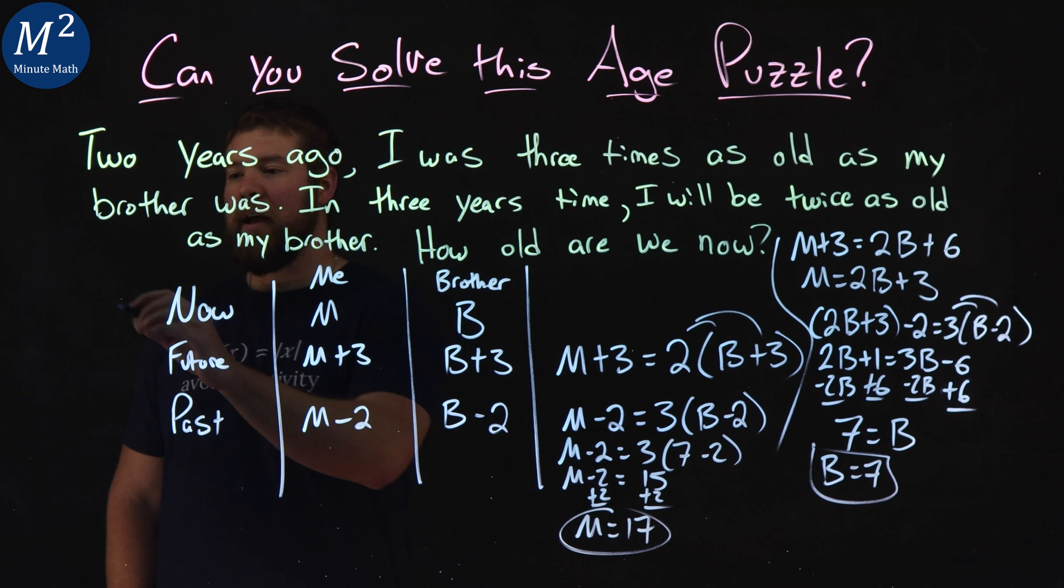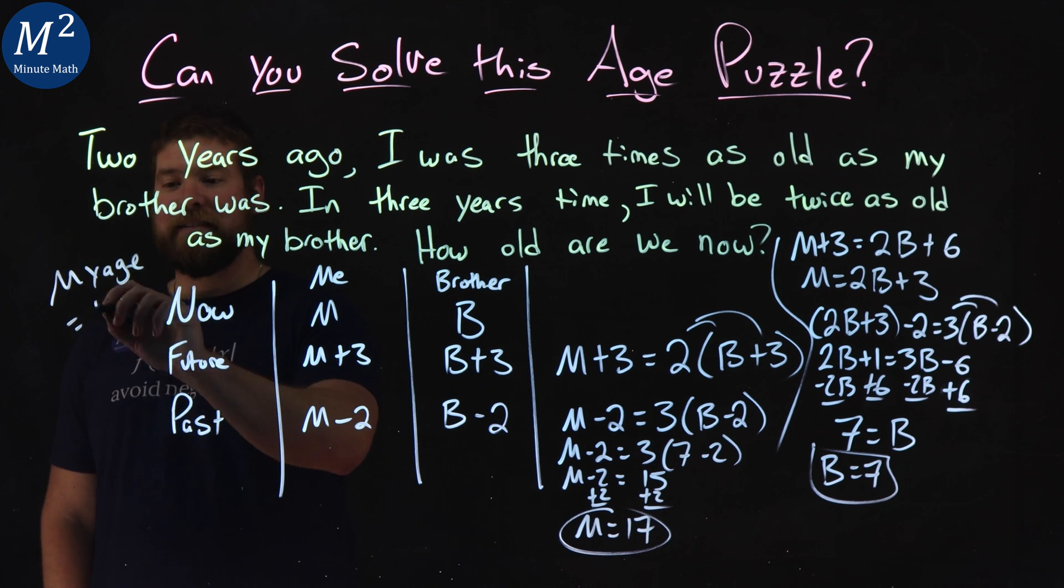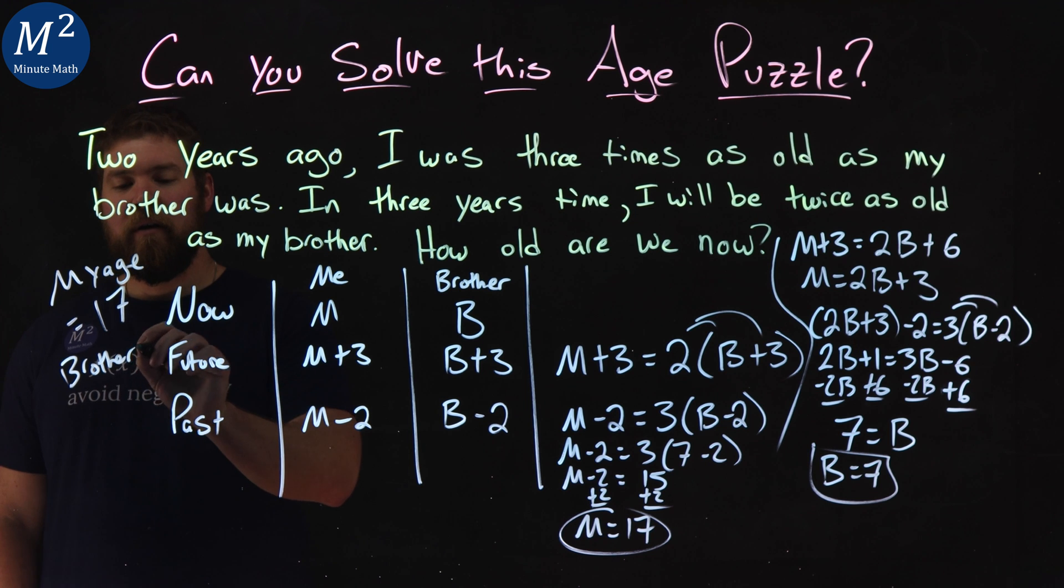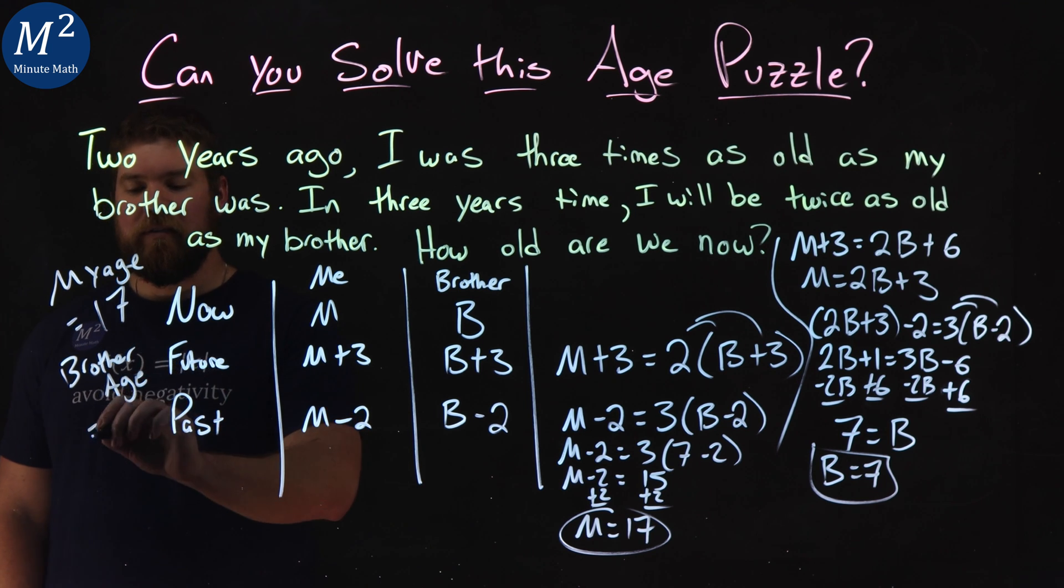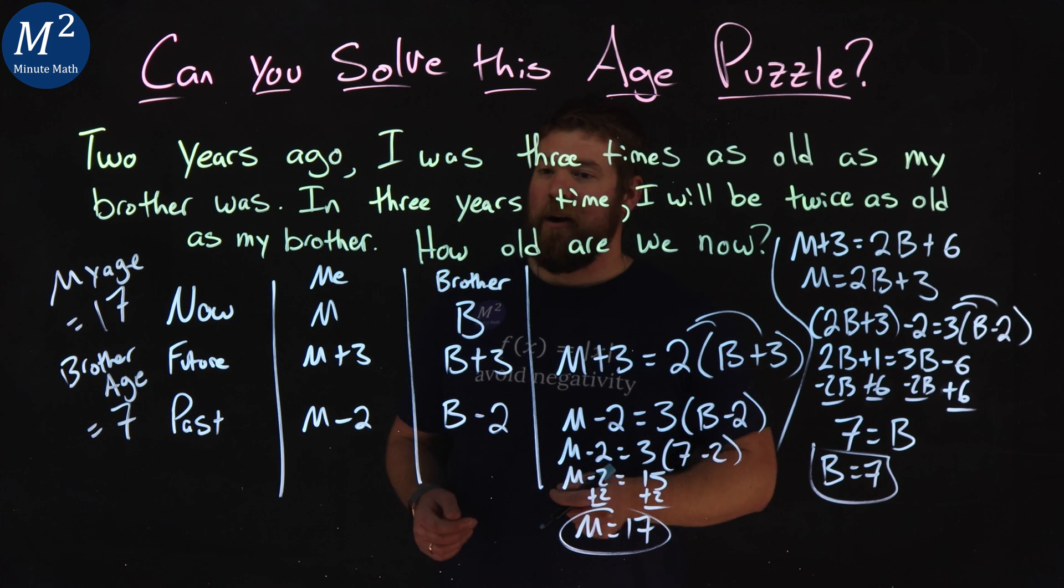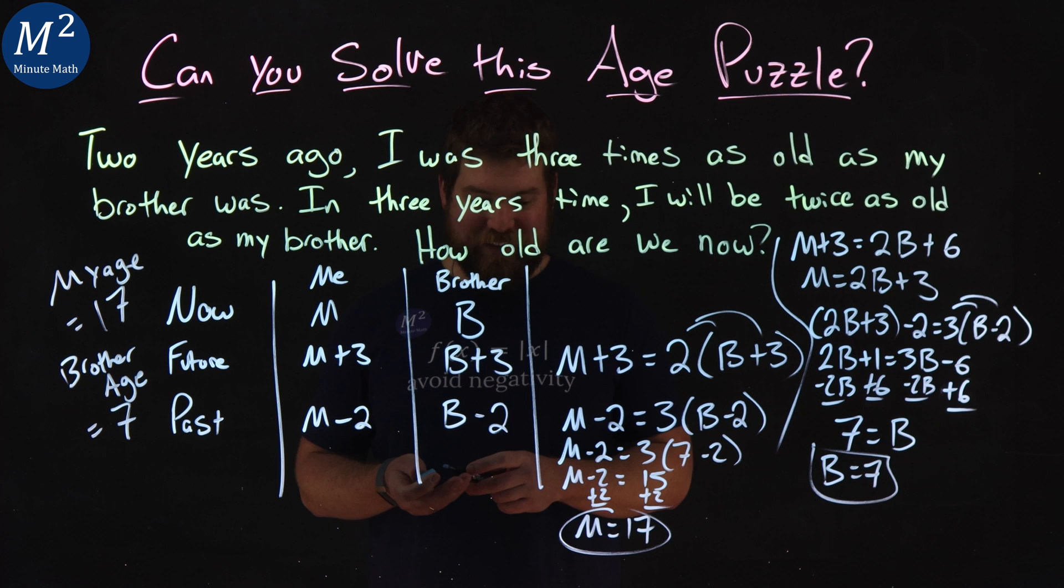And so we have my age is equal to 17, and my brother, who now is revealed as a little brother - actually we probably could have figured it out earlier. Brother's age is equal to seven. And now you know the puzzle. I'm 17 and my brother is seven.